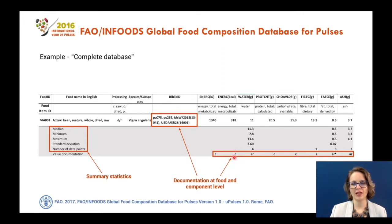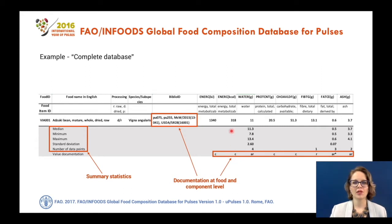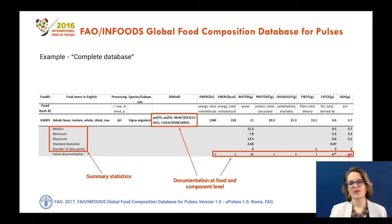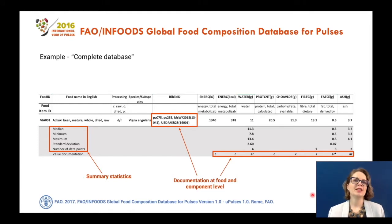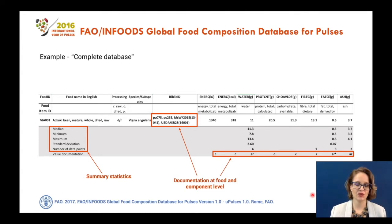For example, the letter C means that this is a calculated value — energy will always be a calculated value in a food composition table. There are other codes as well, meaning we can also have extra documentation for each component presented in the database. Depending on your purpose of using the food composition data, this information can be very useful.